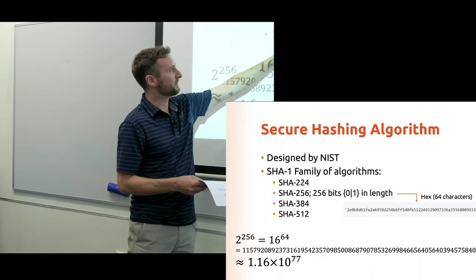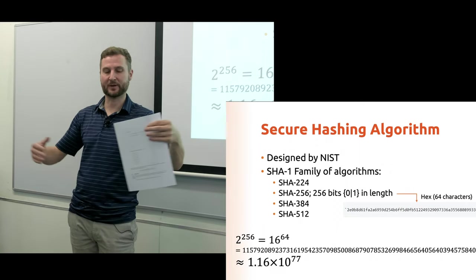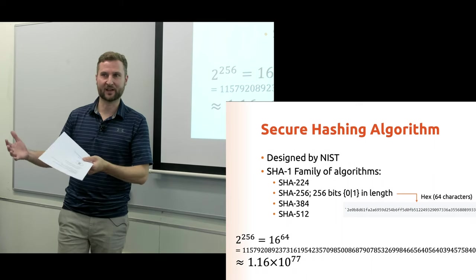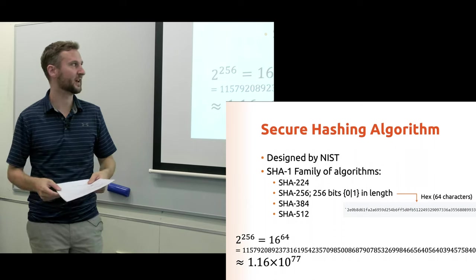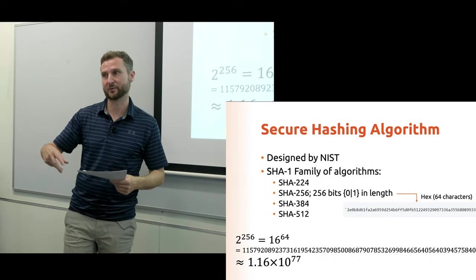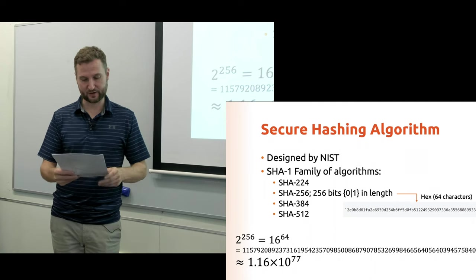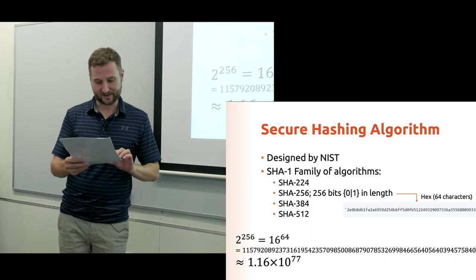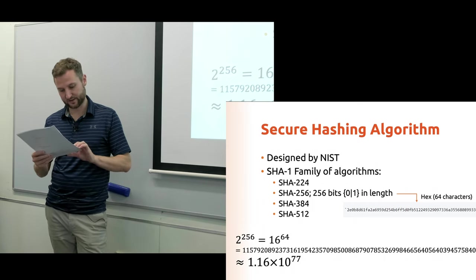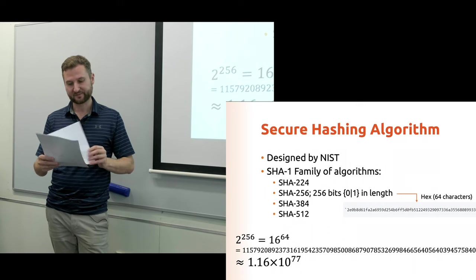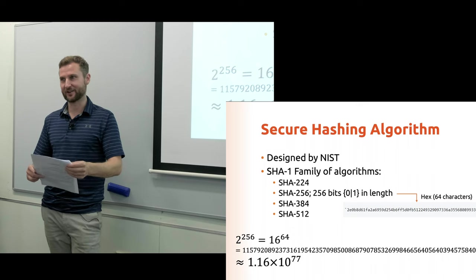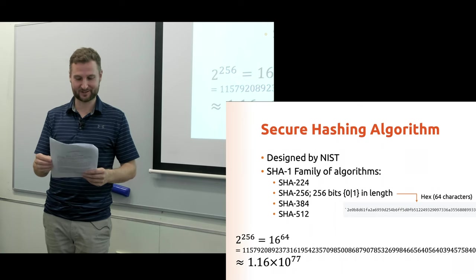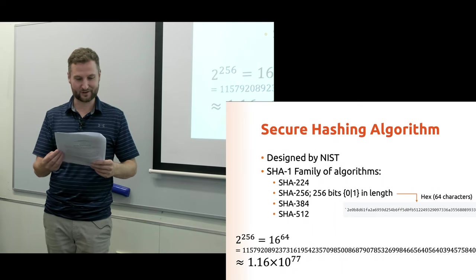SHA-256 is the most common one you hear of. The 256 just means the length — 256 bits. The output you saw for 'Jeff' and 'Jeff' is in hexadecimal format, 64 characters in length, which you could expand to 256 bits of zeros or ones. The family goes all the way up to SHA-512, so the hash would be twice as big. It was developed by NIST — the National Institute of Standards and Technology — a very high-quality institution.